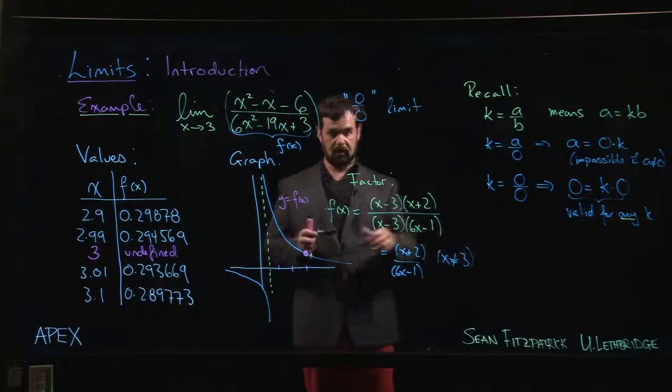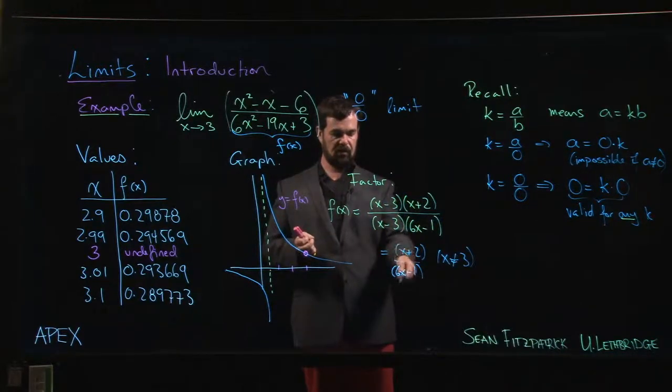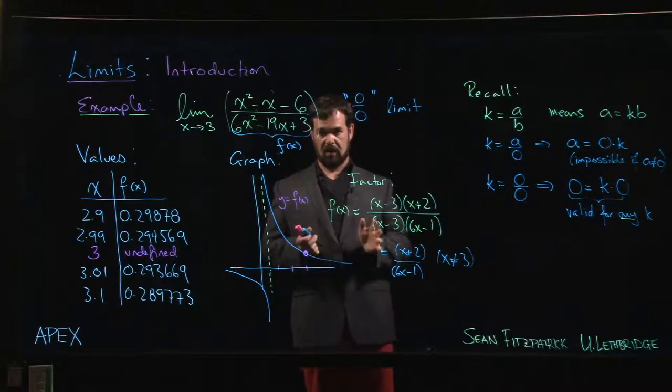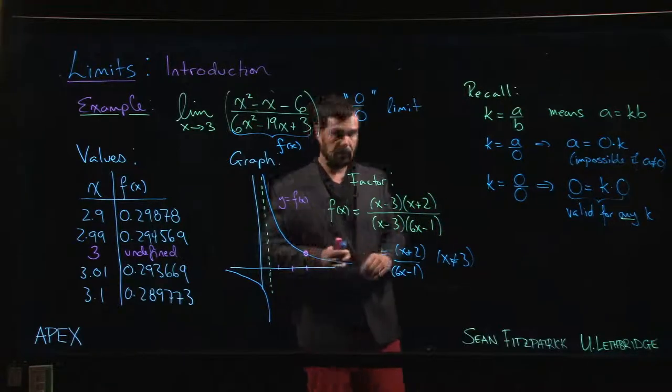The definition of the limit already says, well, x isn't equal to three in the limit. That means you're allowed to make that change, and then you can say, okay, now it's a little bit easier to see what's going on when x is close to three. That's the general strategy in a lot of limits, and you're going to see that a little bit later in the course.